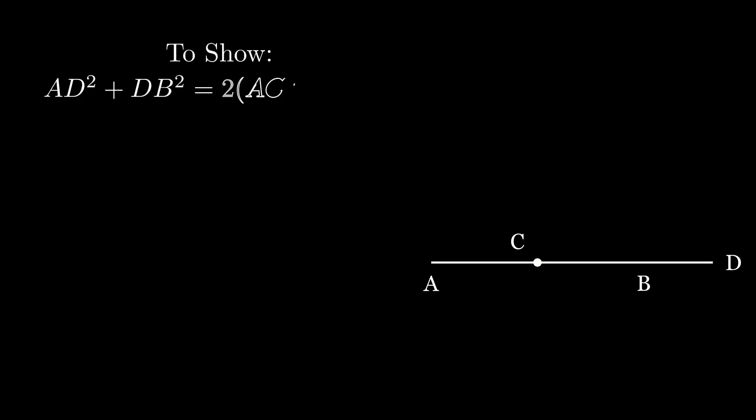Starting with line AB, we bisect it at C and then we draw BD in line with AB, BD not being equal to anything in particular. What we want to show is that AD squared plus DB squared are twice AC squared plus CD squared.